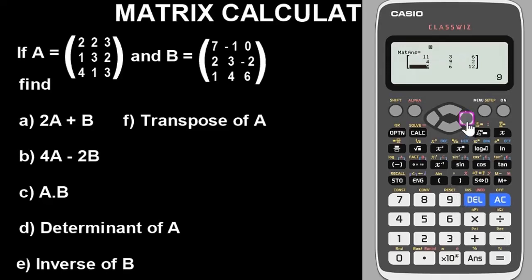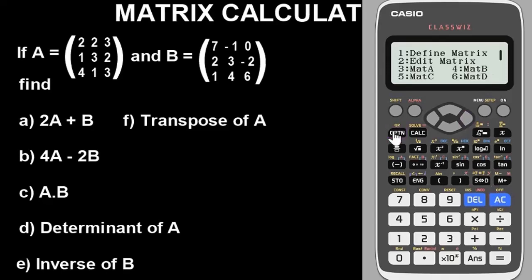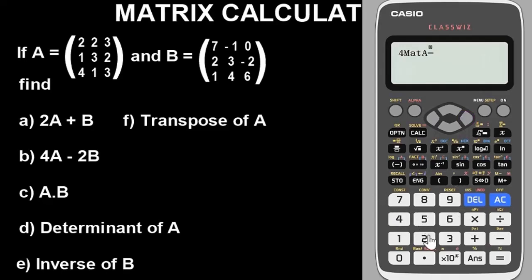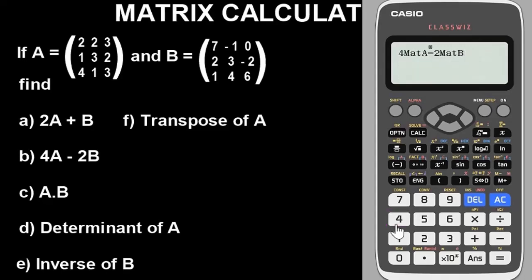Now let's find the subtraction part. Go back to option, select matrix A (option 3), and put the coefficient 4, so type 4 times matrix A. Then press minus for subtraction, and type 2 times matrix B — select matrix B from option. Press equals to get the result. That's the answer for the subtraction aspect of this question.